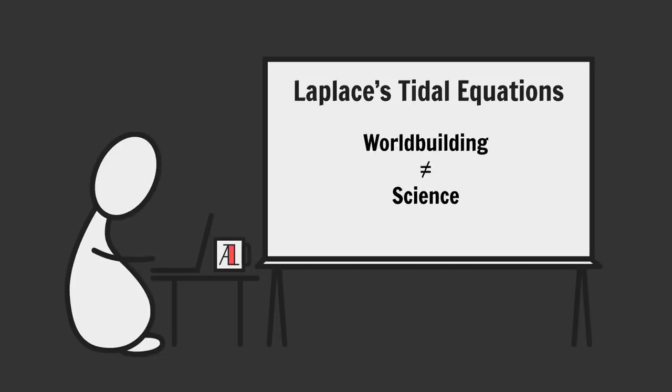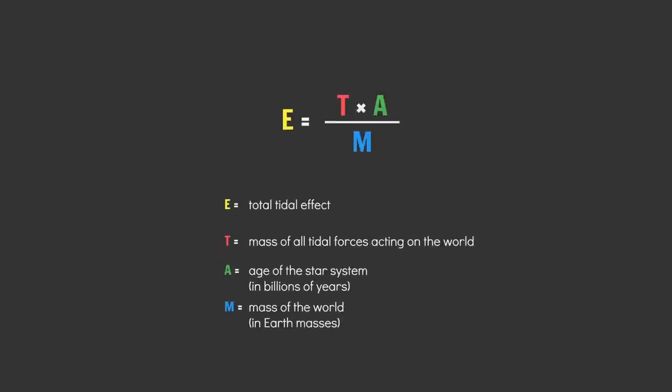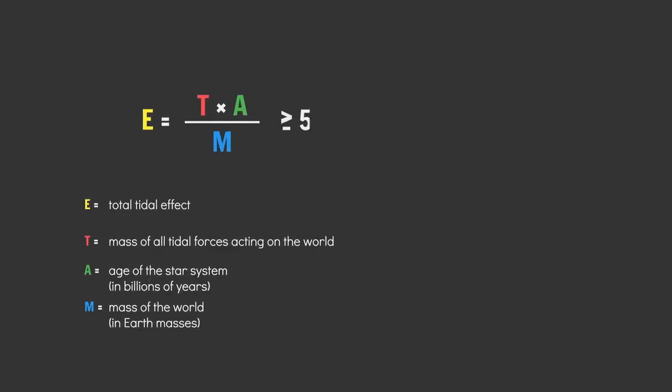Anyways, if you want, you can check if anything is tidally locked using this equation. Round your answer to the nearest integer. If it's 50 or above, the object is locked. A planet will be locked to its innermost moon or star, whichever one makes more sense. And a moon will be locked to its planet. And boom. Horrifically oversimplified tidal calculations. Done.